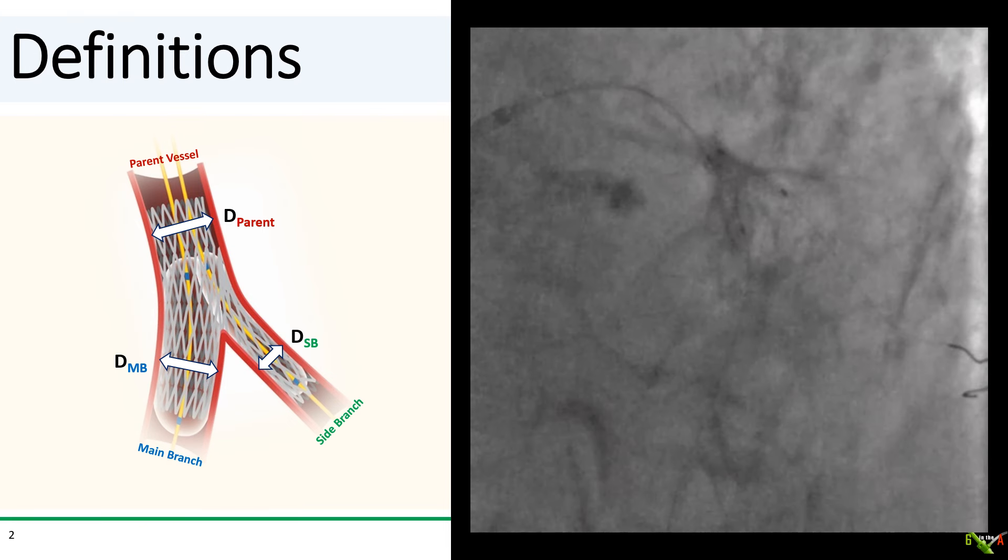First, some definitions so that we're talking about the same thing. I am going to call the main vessel proximal to the bifurcation the parent vessel with a diameter D_parent. I am going to call the larger branch of the parent vessel distal to the bifurcation the main branch and its diameter is D_mb. I'm going to call the smaller branch after the bifurcation the side branch and its diameter is D_sb.